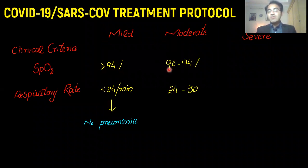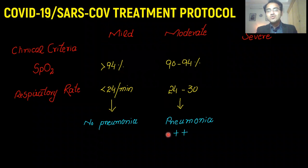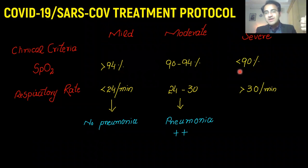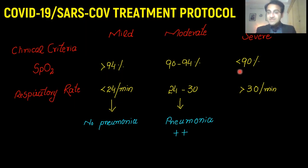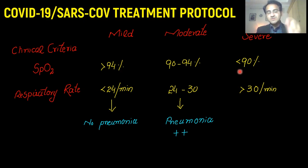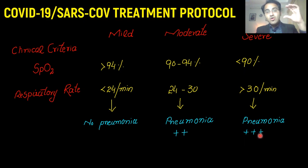If the saturation level is 90 to 94% and respiratory rate is 24 to 30 per minute, then this patient is a case of pneumonia, or simply pneumonia 2+. This patient has to be admitted to hospital. The third case is when saturation level drops below 90% and respiratory rate is greater than 30 per minute. This patient is severe and critical, needing continuous monitoring and treatment in either ICU or hospital, classified as pneumonia 3+. Based on this classification, we will treat each category accordingly.